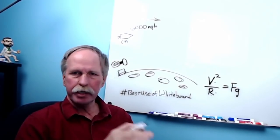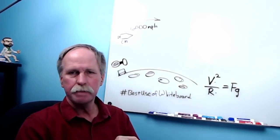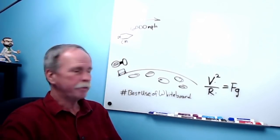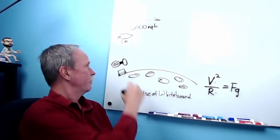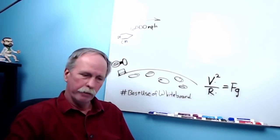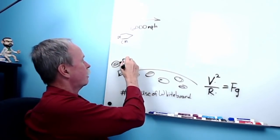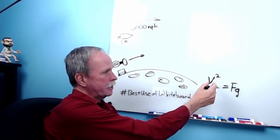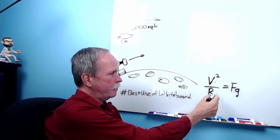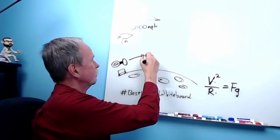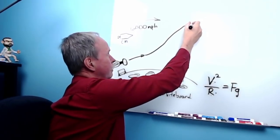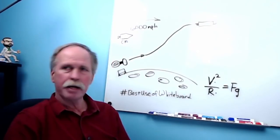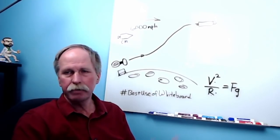When Neil Armstrong and Buzz Aldrin were done on the surface, they blasted off in the ascent module, leaving the descent module behind. The ascent module had a small rocket motor; it went up and to the side under constant rocket power. As it increased its velocity, it increased the radius from the center of the moon and started climbing, eventually catching up with the command module in orbit. They docked, transferred crew, and headed home.